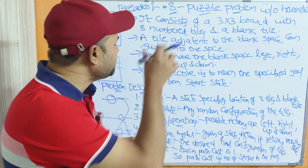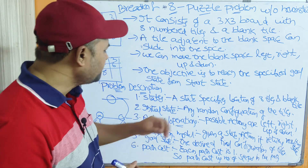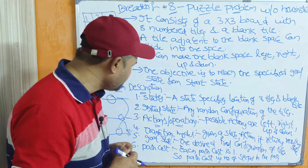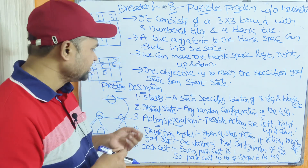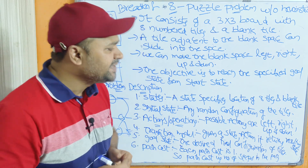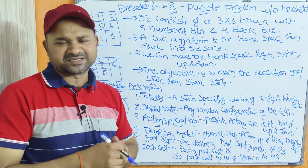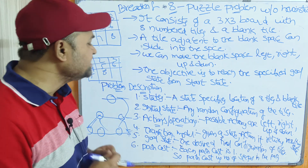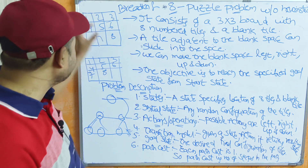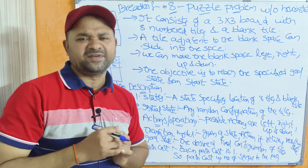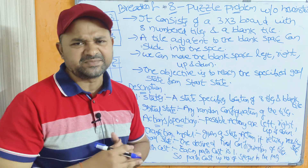In order to describe the 8-puzzle problem, we are going to use 6 parameters: states, initial state, actions or operations, transition model, goal state, and path cost. A state specifies the location of the 8 tiles and the blank tile. Initial state means any random configuration of the tiles — we have 8 numbered tiles as well as 1 blank tile in some configuration.